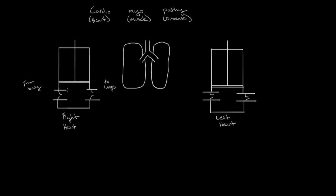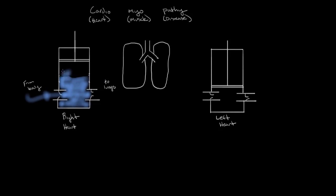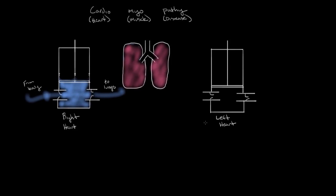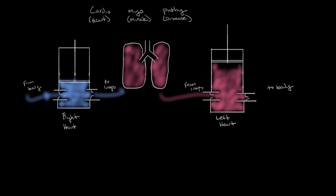The right heart draws blood in from the body and pumps it to the lungs. Once in the lungs, the blood is oxygenated, and then the left heart is used to pump the blood from the lungs to the body. What's cool about the heart is that these two pumps are actually pumping simultaneously — both going up and down, bringing blood from the body to the lungs and from the lungs to the body.